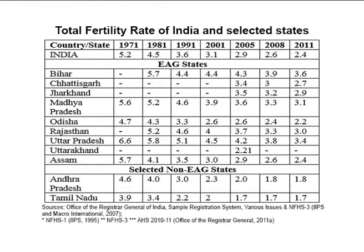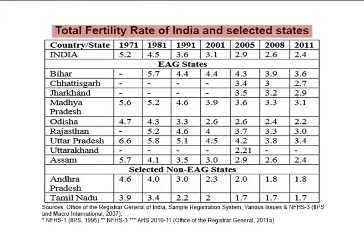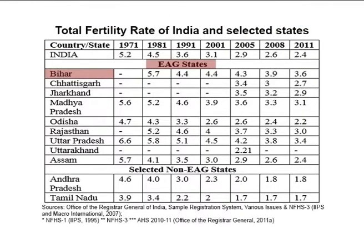First, trends in Total Fertility Rate in India. While studying the fertility trends depicted by Table 3 on your screen, four indicators of total fertility were considered. TFR, the most widely used measure of fertility, was 2.4 for India in 2011. Among the EAG states, Bihar was positioned at the top with a TFR of 3.6, and UP with a TFR of 3.4 placed second in 2011.